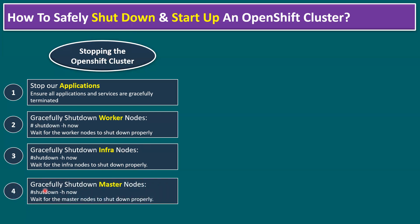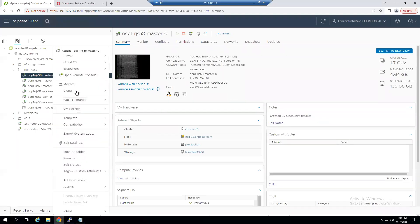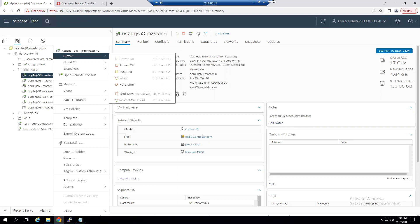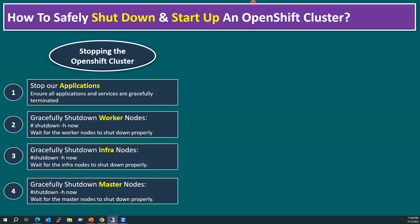The fourth step is to gracefully shut down the master nodes — master nodes are also called control plane nodes. You can shut them down directly from vCenter Server or from the command line. Same as with worker nodes: select the master, right-click, go to Power, and select 'Shut Down Guest OS'. We have to shut down all three masters — master-0, master-1, and master-2. Currently in our lab I am just showing the options and the sequence, not actually performing the shutdown.